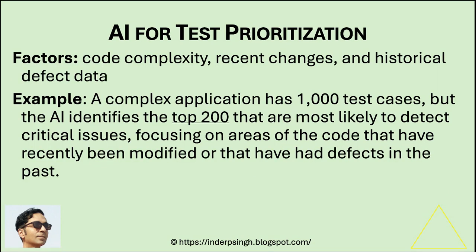AI for test prioritization: artificial intelligence can analyze code complexity, recent changes, and historical defect data to prioritize test cases. This smarter software testing helps testers with tight schedules, especially when they use automation testing with AI.